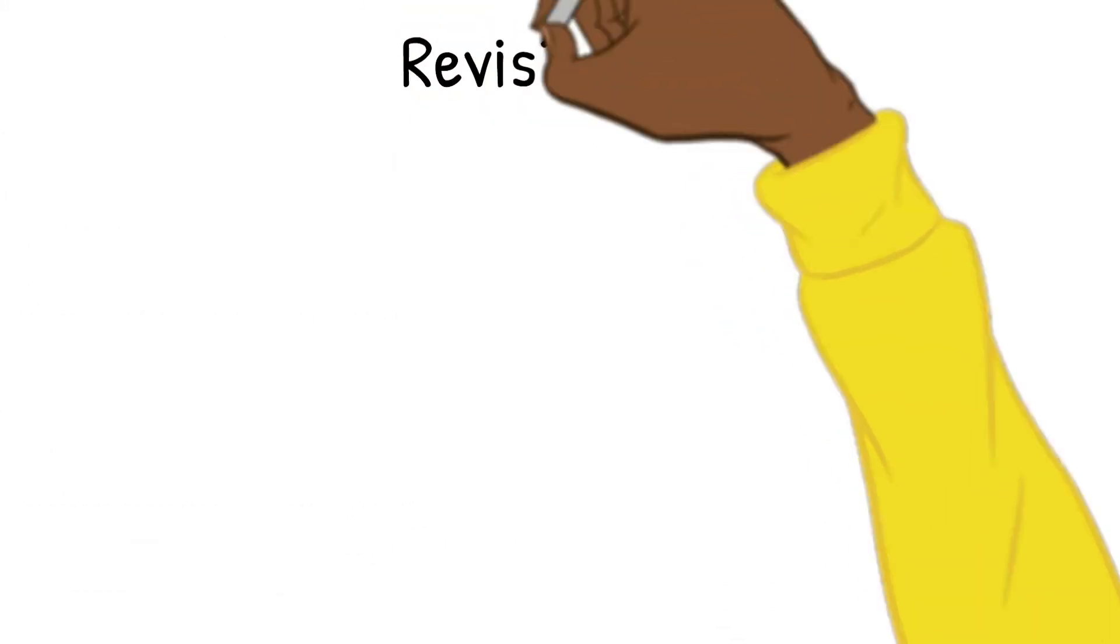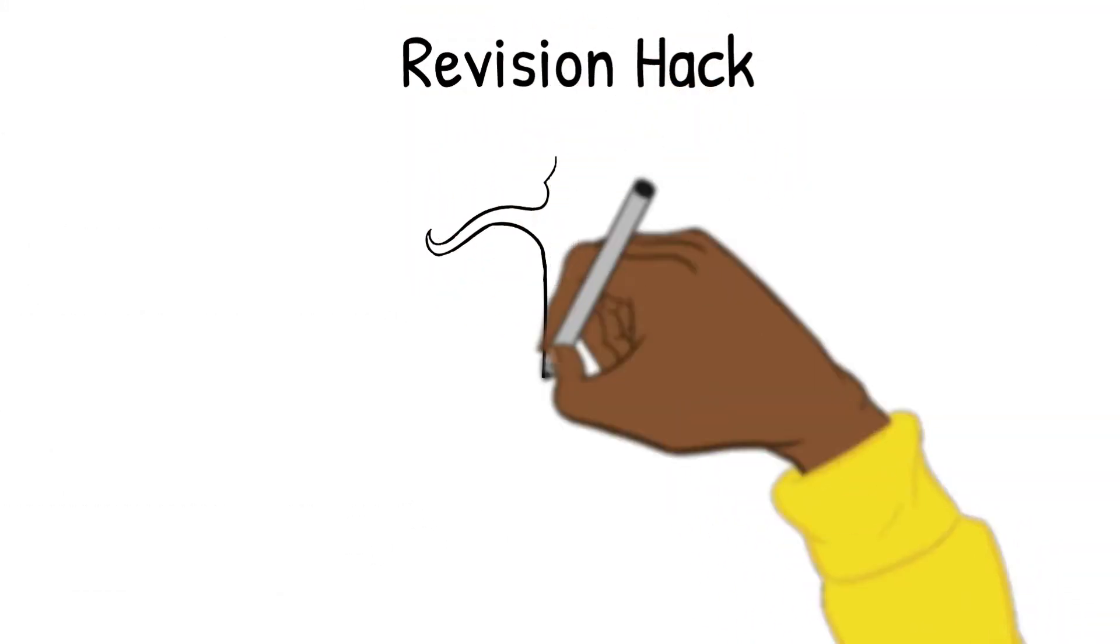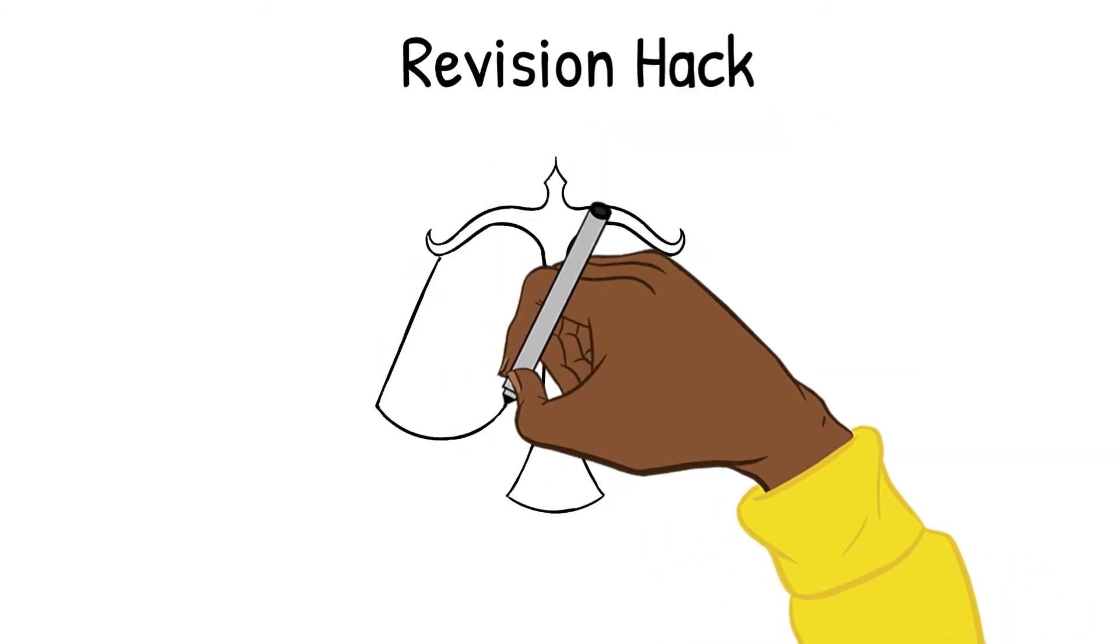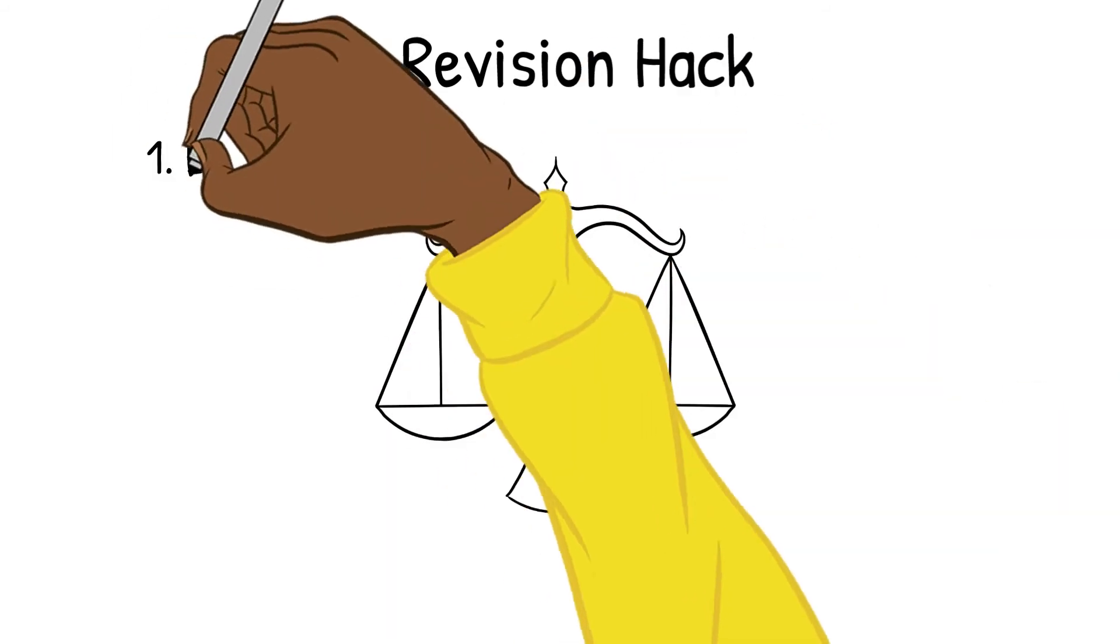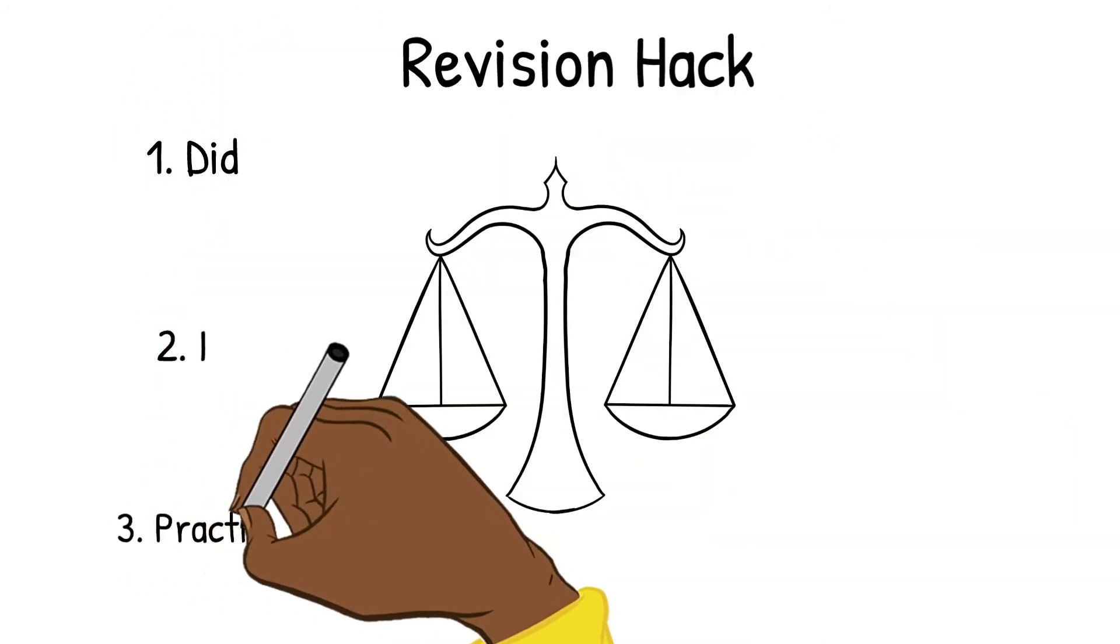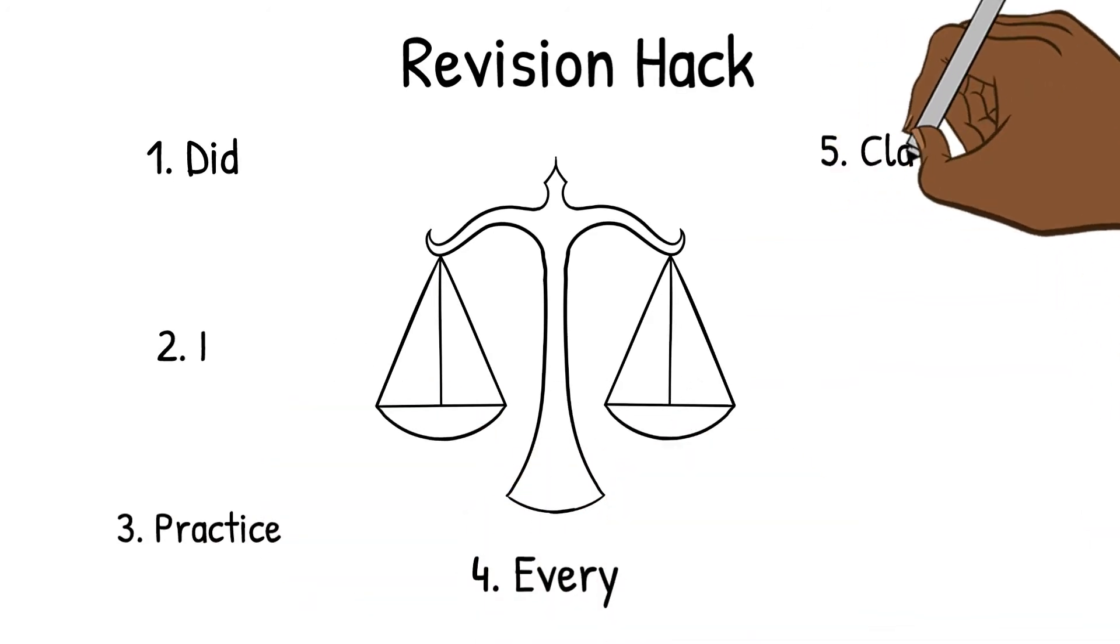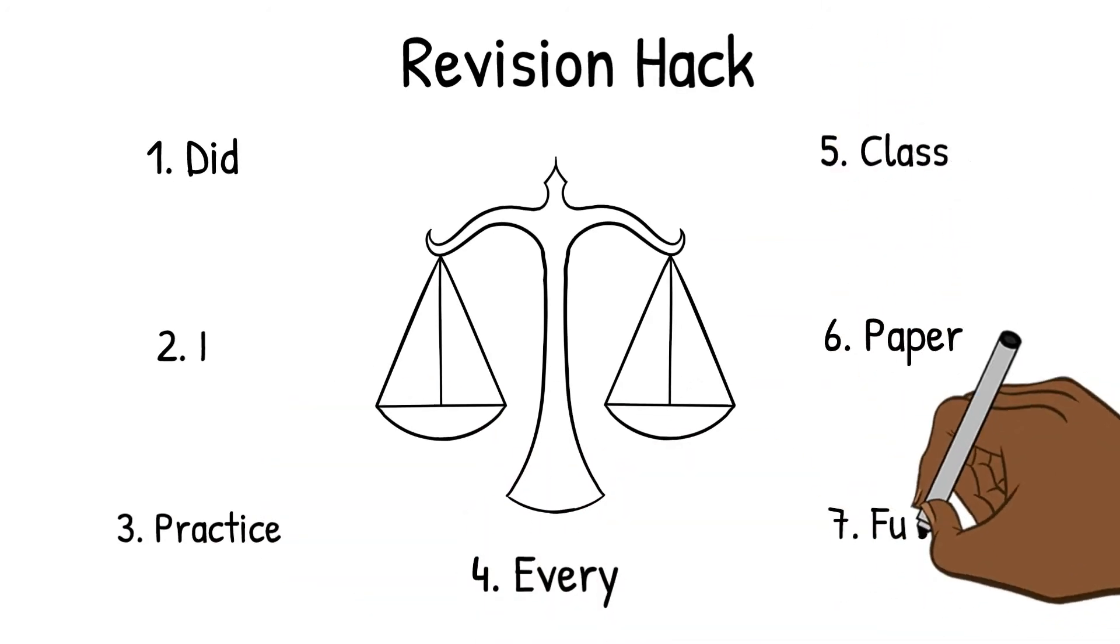Six, purity - how free from pain is it; and finally seven, fecundity - will it lead to more pleasure. Some fancy words I know right, but try to remember it with this acrostic: did I practice every class paper fully - duration, intensity, propinquity, extent, certainty, purity, and fecundity.